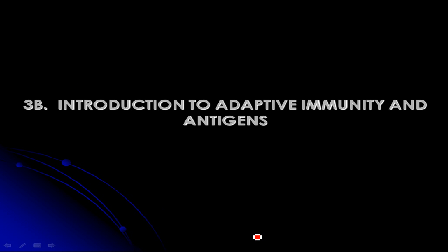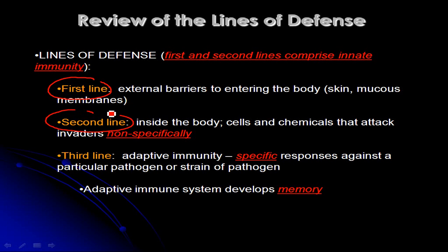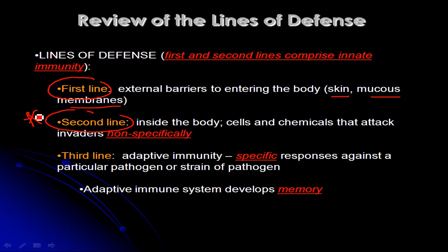As I mentioned, we're going to start talking about the adaptive immune system, but before we do that let's run through and review the lines of defense one more time. We've already talked about the first and second lines of defense. The first line includes those barriers to pathogens being able to get into the body — your skin and your mucous membranes. Once organisms breach those barriers, they face your second line of defense, which includes cells like neutrophils, basophils, and macrophages.